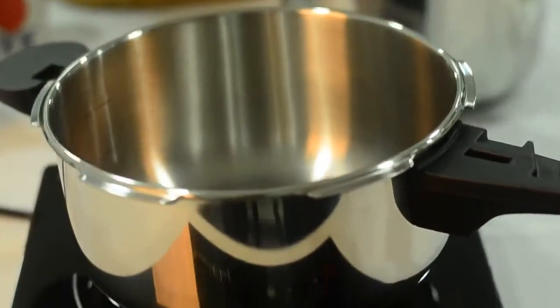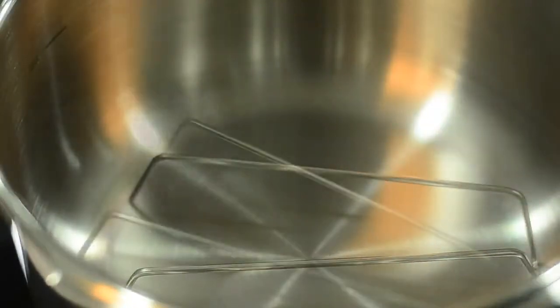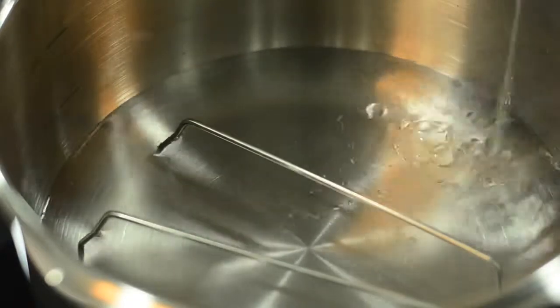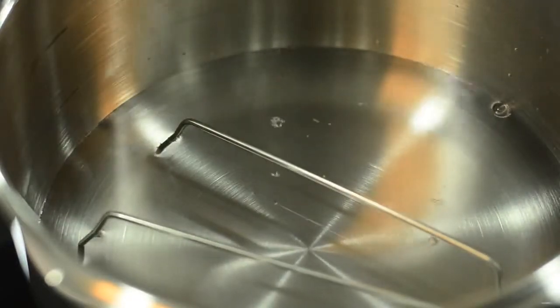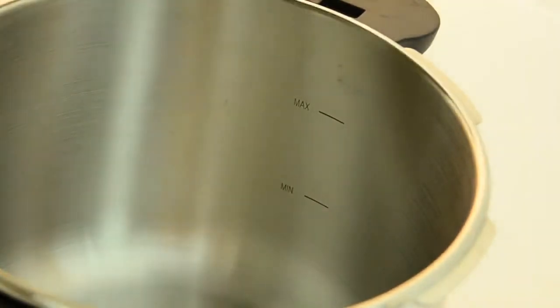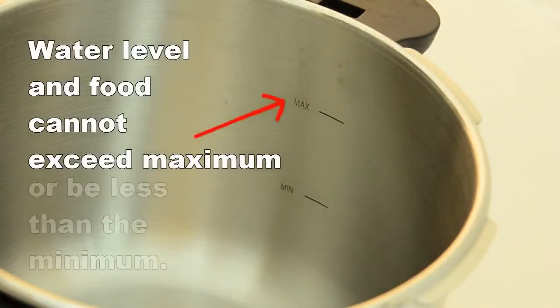Place the pressure cooker on the stove. Then place this steamer rack stand in the pressure cooker and pour in the water. The amount of food to be cooked, which is the quantity of ingredients plus the water, must be within the maximum and minimum level, which means it cannot exceed the maximum level or be less than the minimum level.